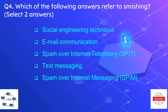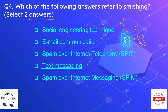Question number four: which of the following answers refers to smishing? We have to select two answers. The options are social engineering technique, email communication, SPIM, internet telephony, text messaging, or internet messaging. The correct two answers are social engineering technique and text messaging. Smishing combines social engineering and text messaging — S stands for social engineering and M stands for messaging.